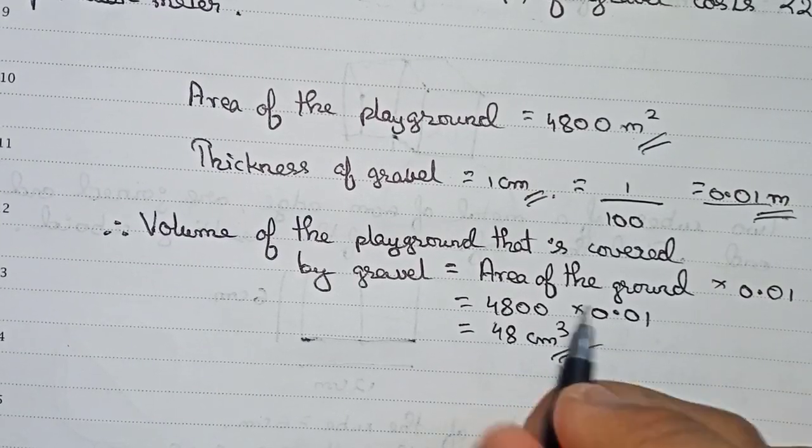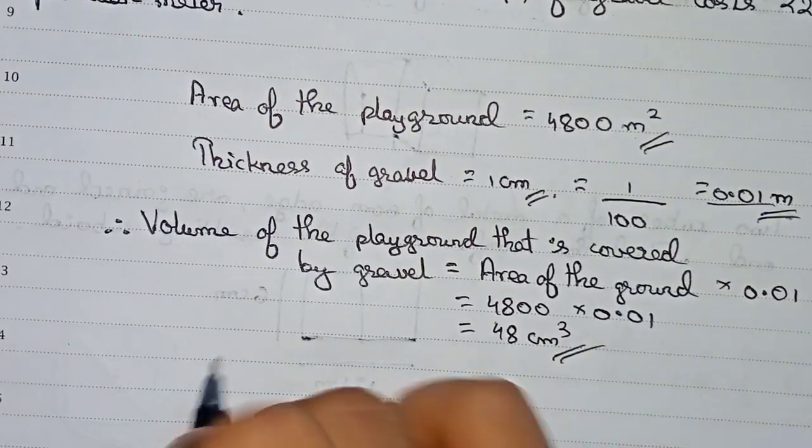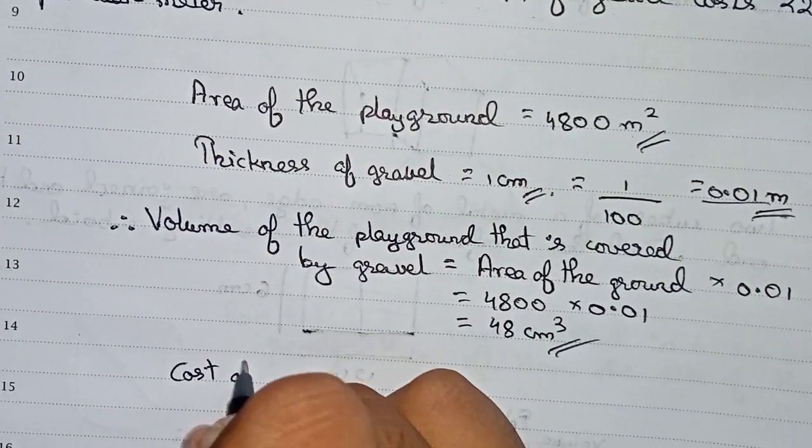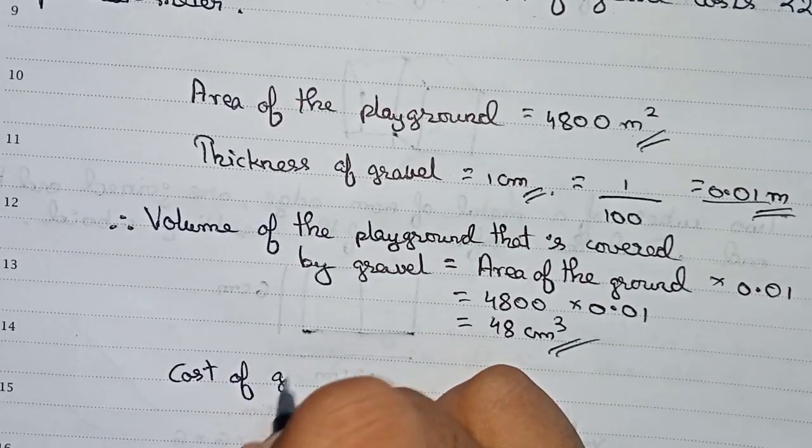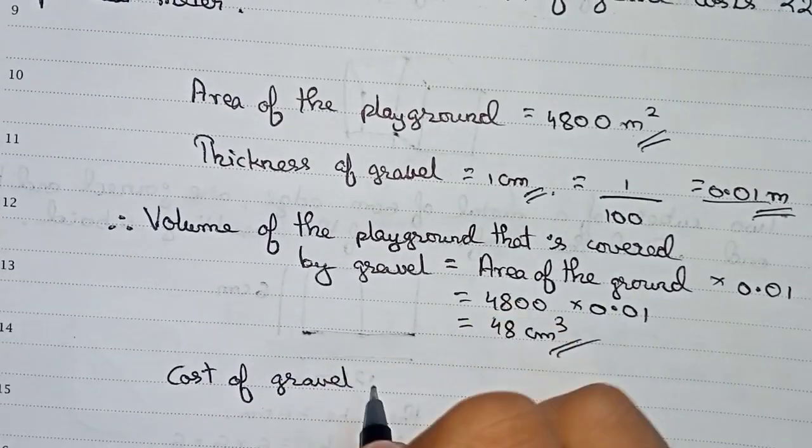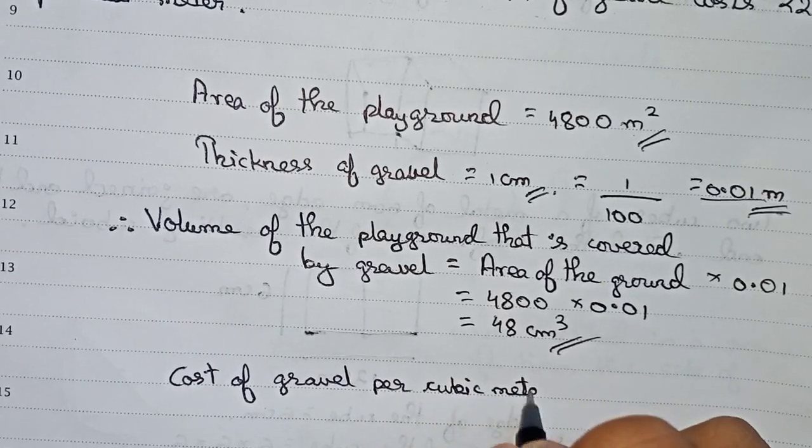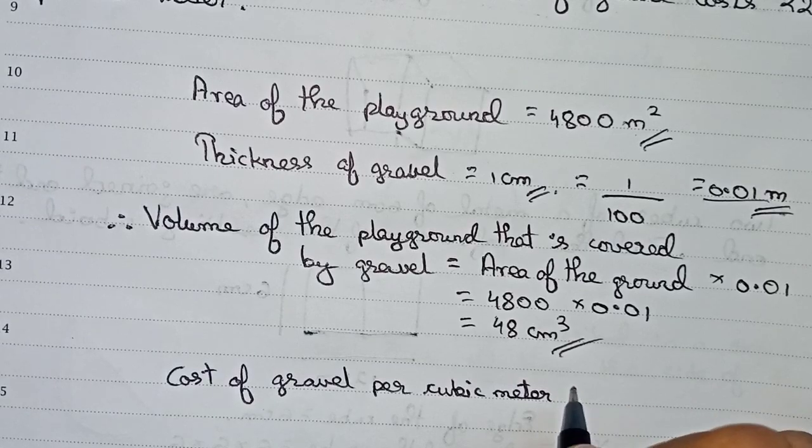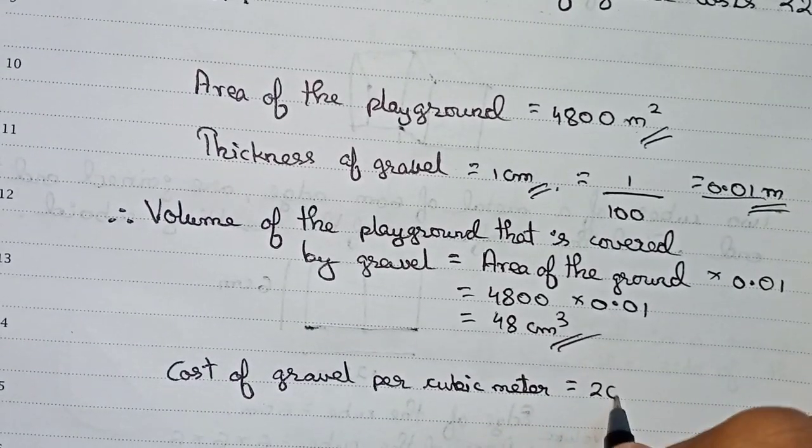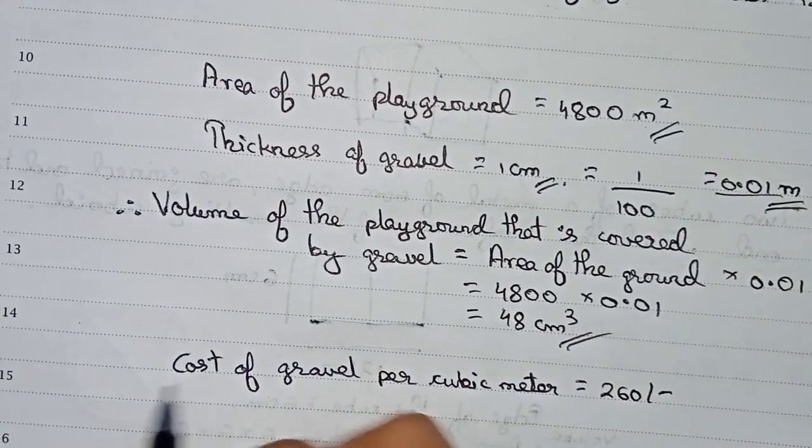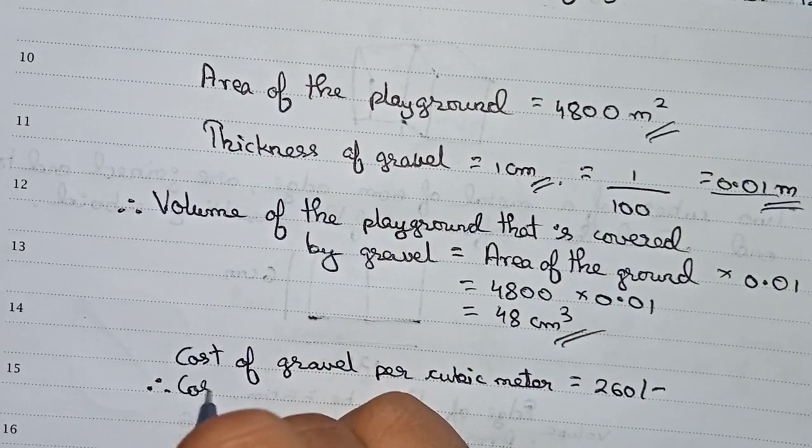Now it is given that cost of gravel per cubic meter - per cubic meter gravel cost is 260 rupees. From this information we can find out the cost of gravel.